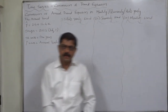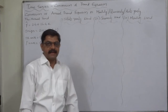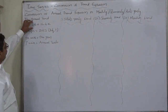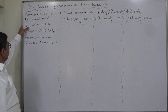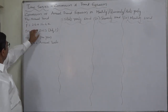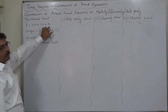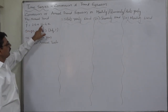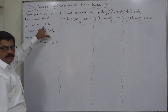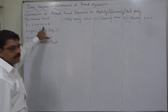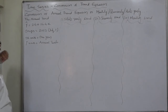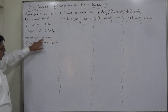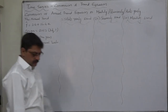Hello and welcome. Namaskar. Time series conversion of trend equation. We have an annual trend: y estimated equals 24 plus 14.4x. That means the value of constant a is 24 and b, the slope of the trend, is 14.4. This is an annual trend with origin 2013 July 1, x units one year, y units annual totals.